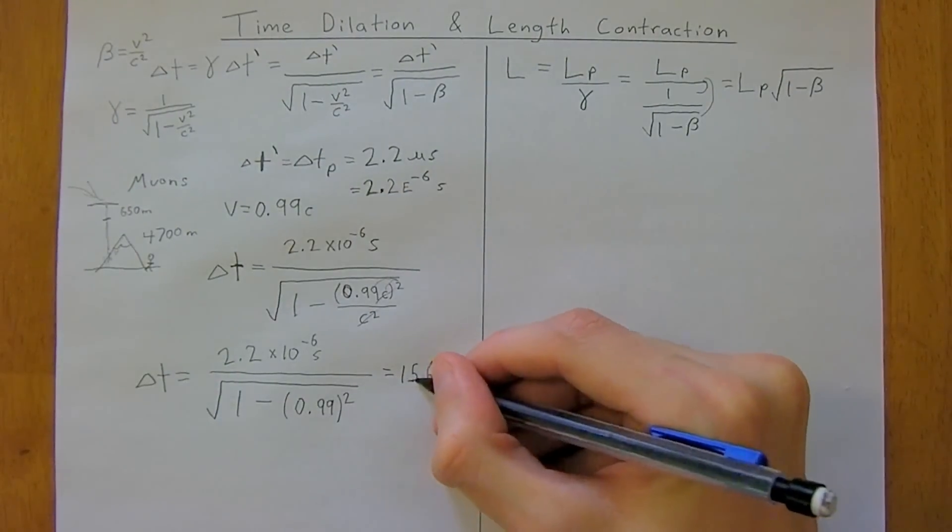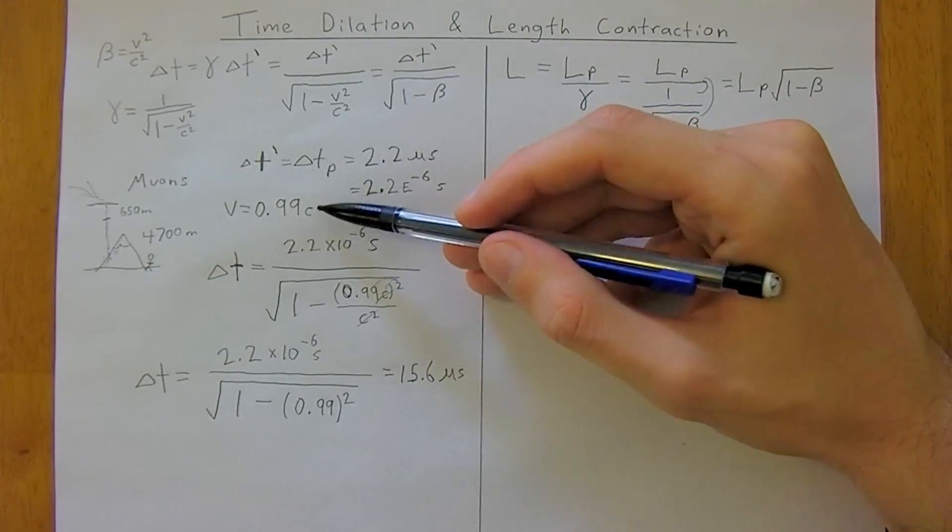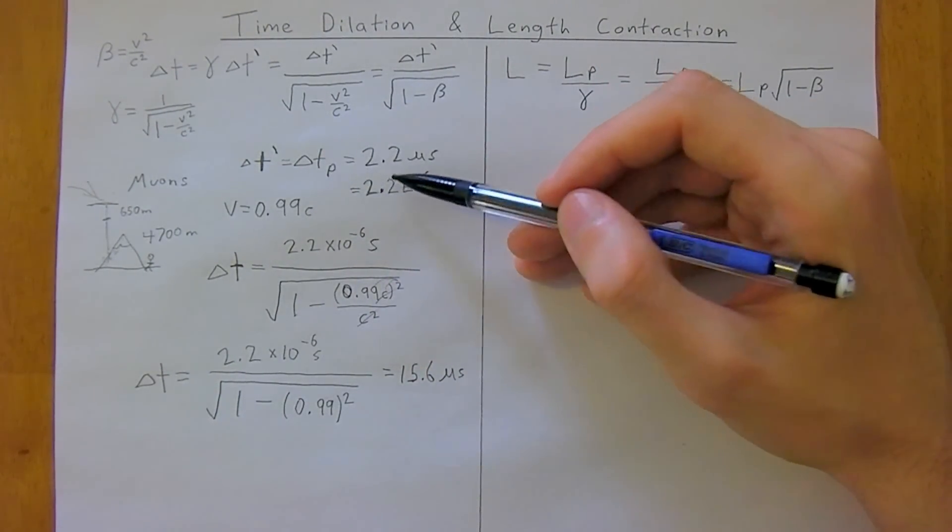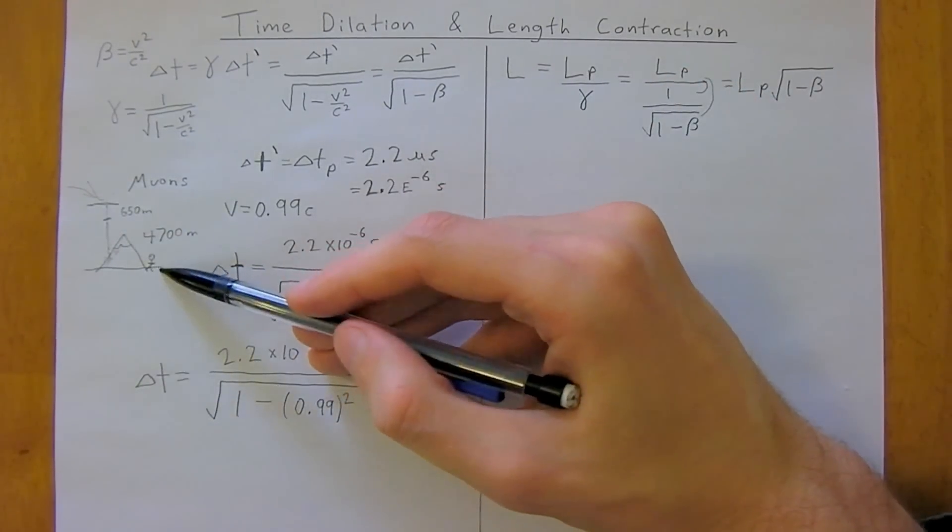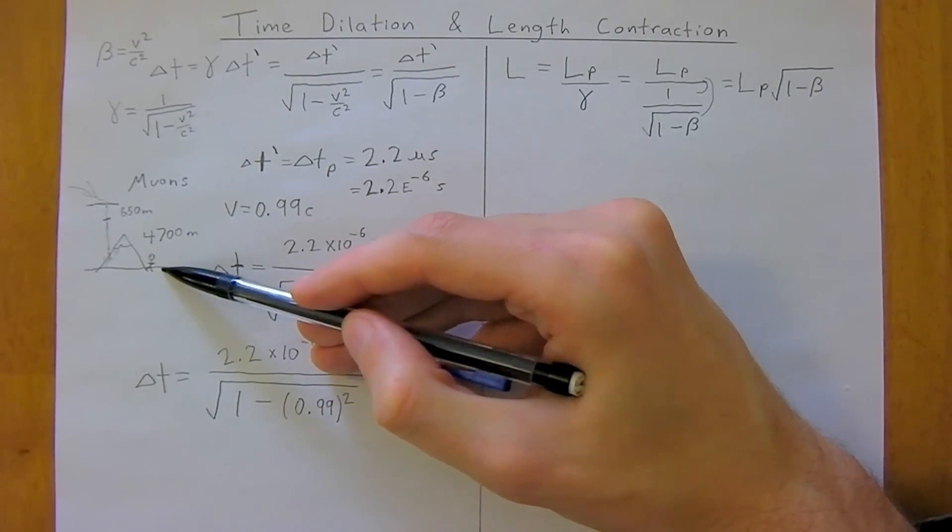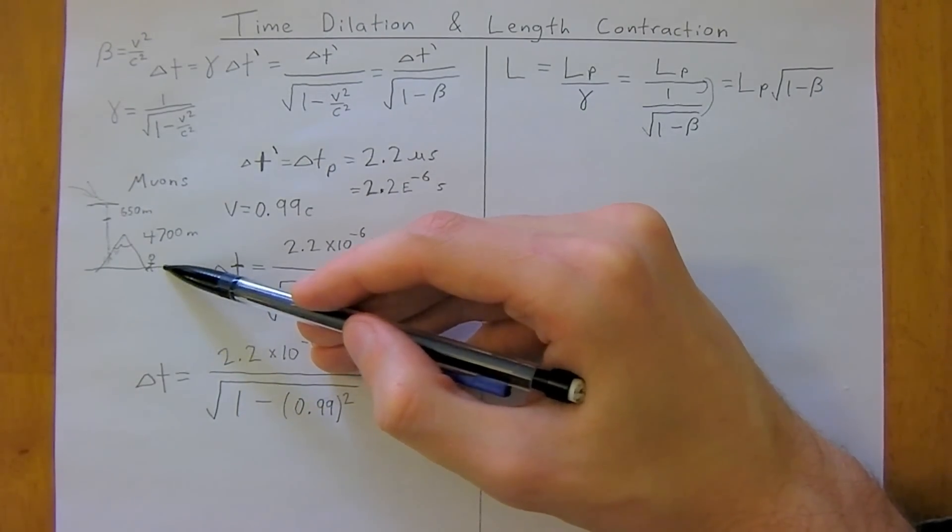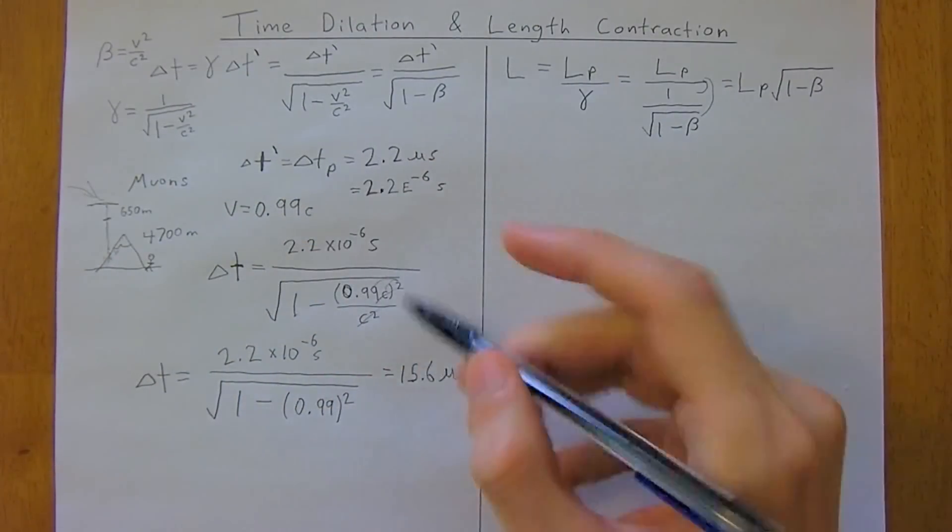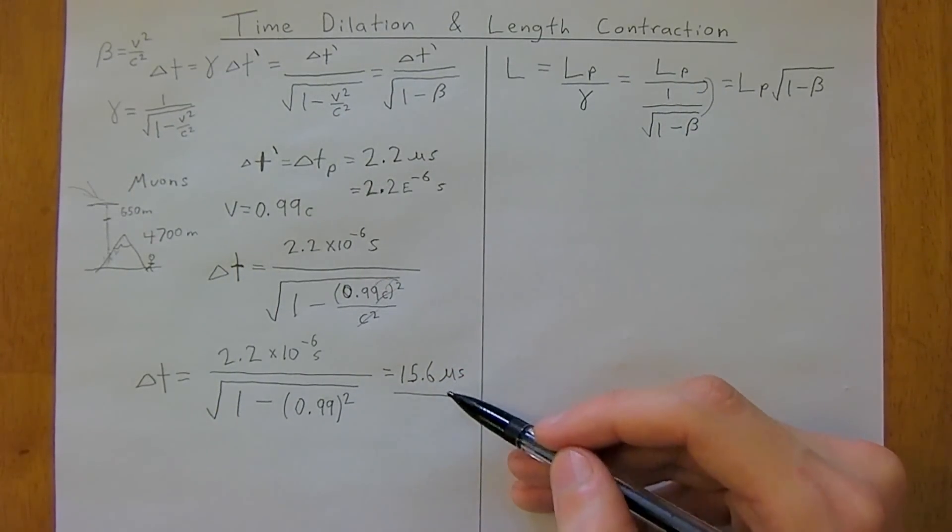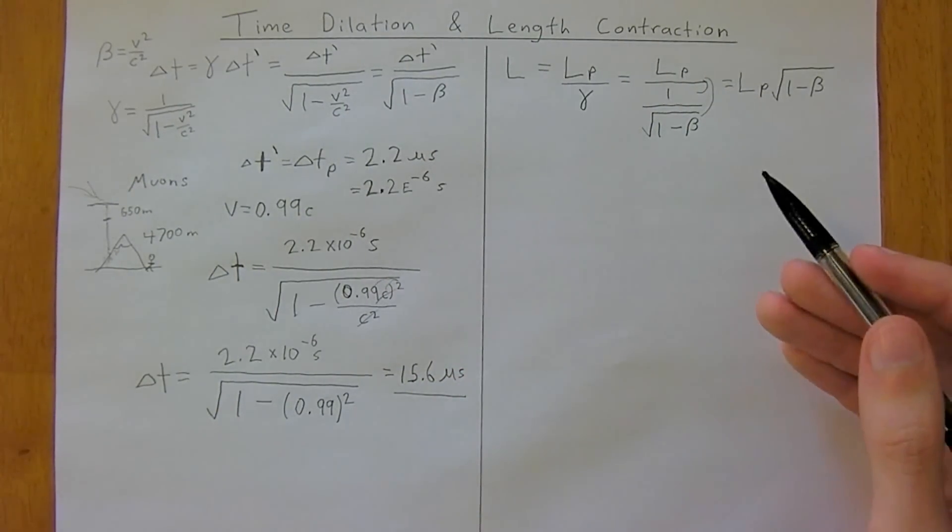So, this is where time dilation comes in. So, as you go faster, your time in your reference frame is the same, but now your time viewed from, say, Earth, an observer who's stationary with respect to you, well, your lifetime is going to change, and it's now going to be 15.6 microseconds.